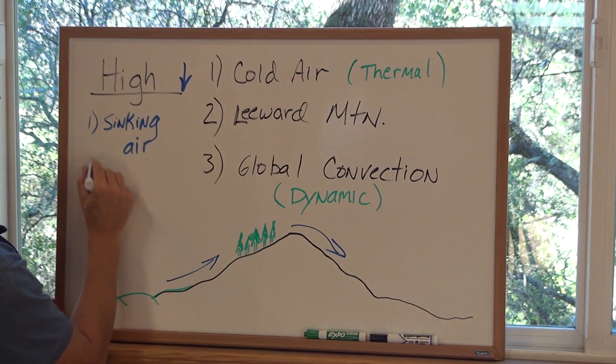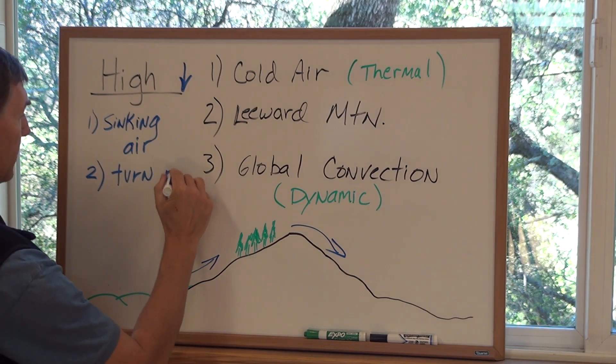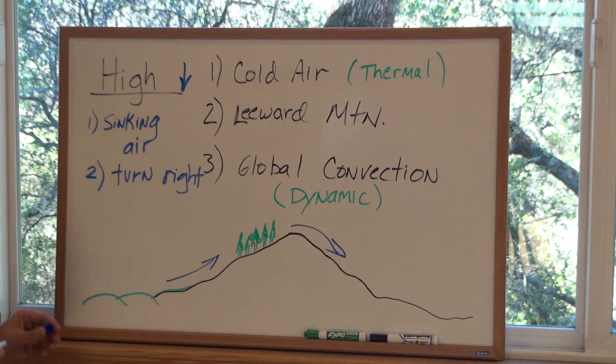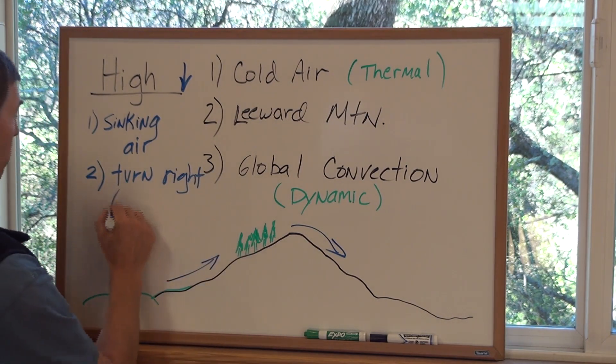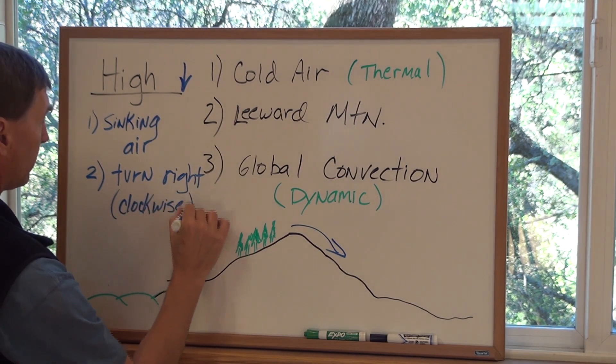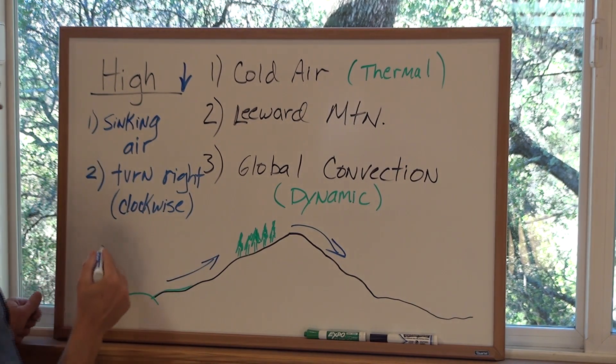Number two, it is going to turn or be deflected to the right, and I live in California so that's in the northern hemisphere. It's going to be deflected to the right. We'll also call that clockwise. Incidentally, if you live in the southern hemisphere it will go the opposite direction, but air will still sink no matter where you are.